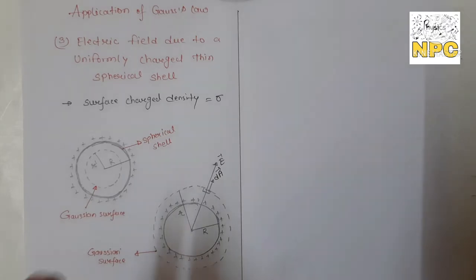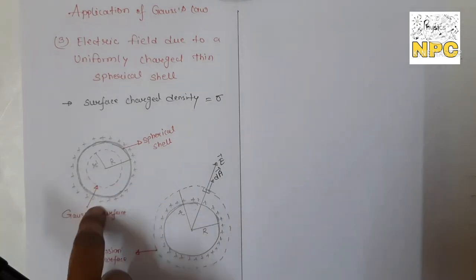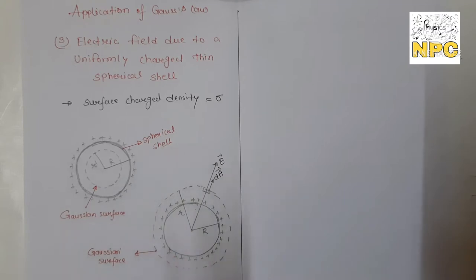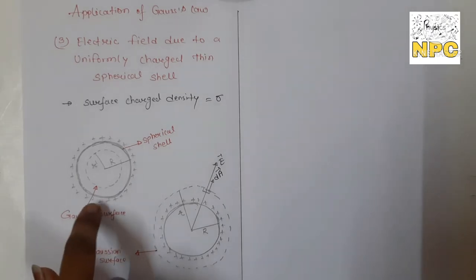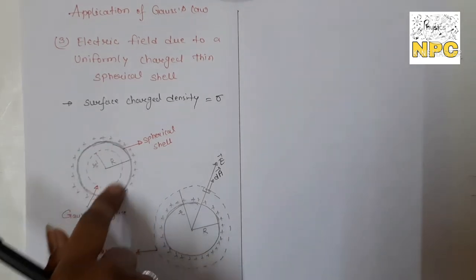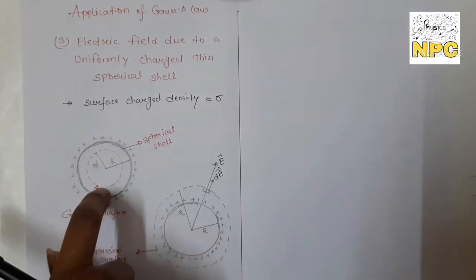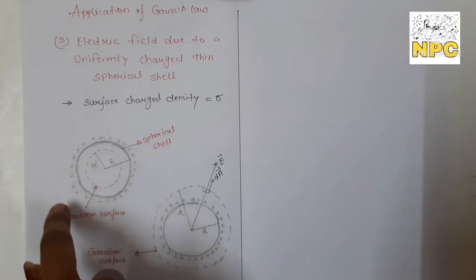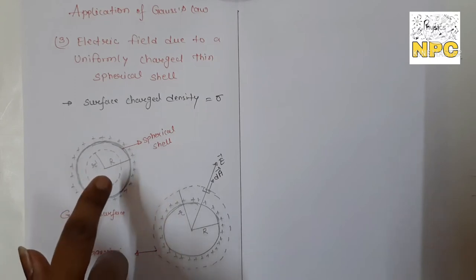Here we will find the electric field through the spherical shell both inside the shell and outside. You can see in the diagram there are two positions: inside and outside. We will draw the Gaussian surface inside the shell for the inside case, and on the outer side of the shell for the outside case.